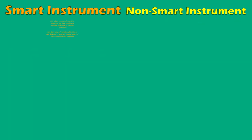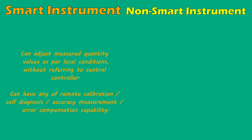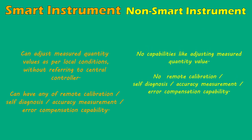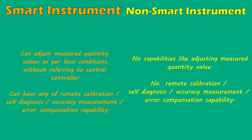Smart and Non-Smart Instruments. Smart instruments are those which can adjust the measured quantity values as per local conditions without any need to refer to the central controller. Non-smart instruments don't have any such capability to react as per local conditions. Smart instruments can have remote calibration capability, self-diagnosis of faults, accuracy measurement, error compensation, etc. Non-smart instruments don't have any such capability.